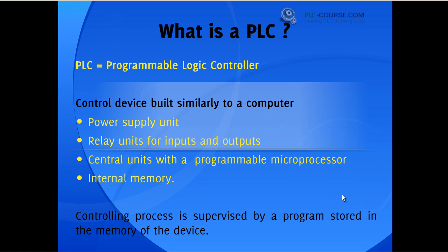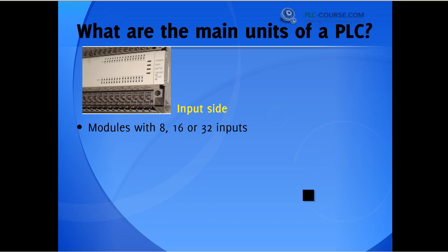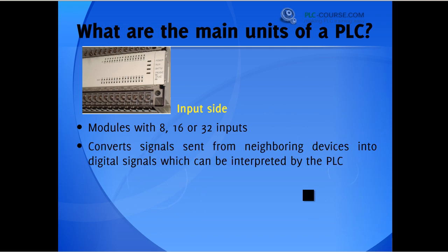Now what are the main units of a PLC? A PLC consists of an input side comprising modules with 8, 16, or 32 inputs depending on the model. The main task of this unit is to convert signals sent from neighboring devices, for example electrical signals, into digital signals which can be interpreted by the PLC.